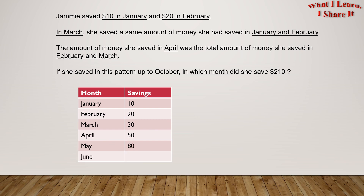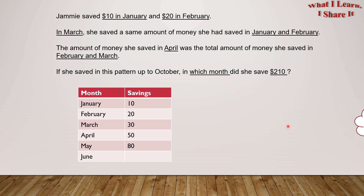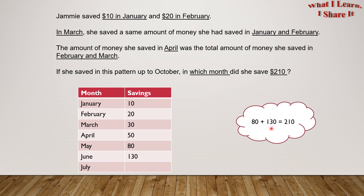So for the month of June, what will be the savings? Yes, it will be the sum of the savings of April and May, which is $50 plus $80 equals $130. So the savings of June will be $130. In the same way, for the month of July, the savings will be the sum of May and June savings, which is $80 plus $130 equals $210. So the savings for July will be $210.